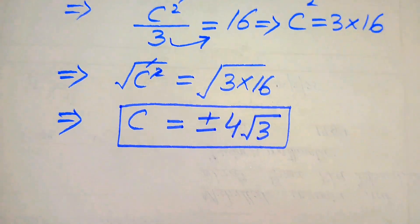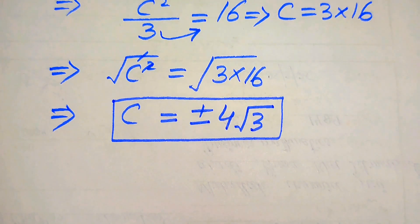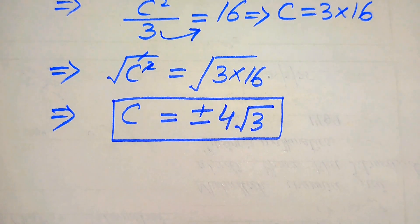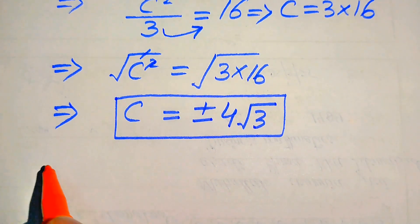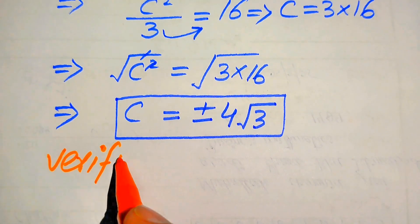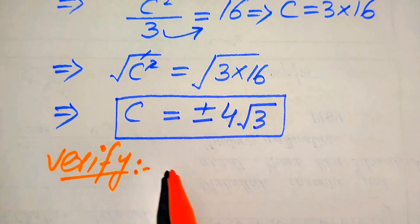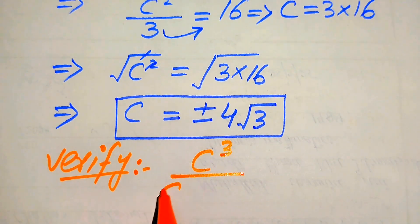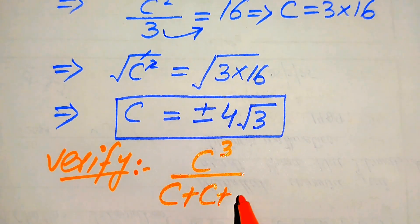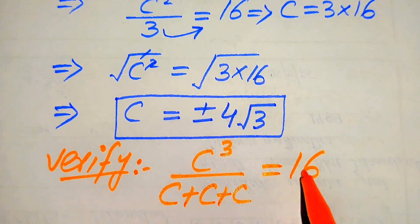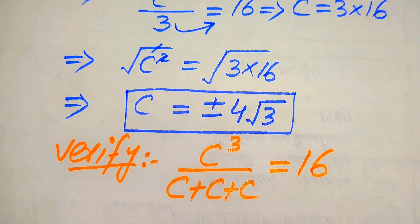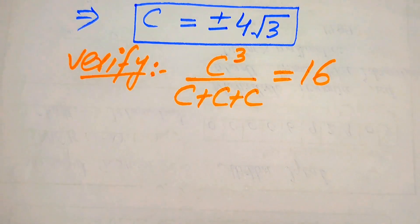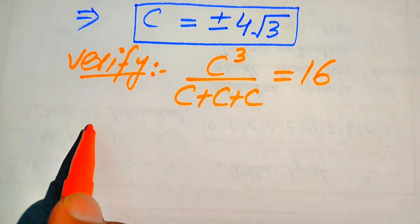Further, in the next step we need to verify these roots and check which one is a solution and which one is an extraneous root. In order to verify the roots, we copy down the given question statement: c cubed divided by c plus c plus c equals 16. We divide these into two cases.